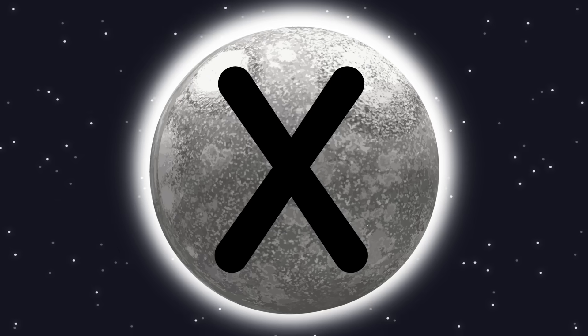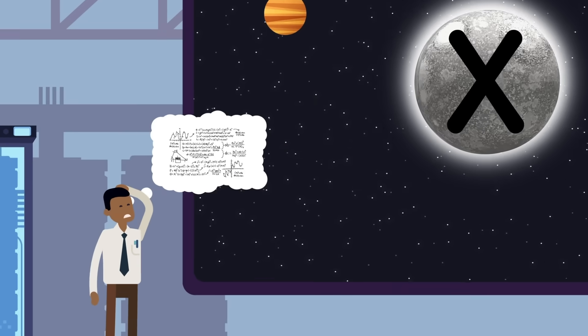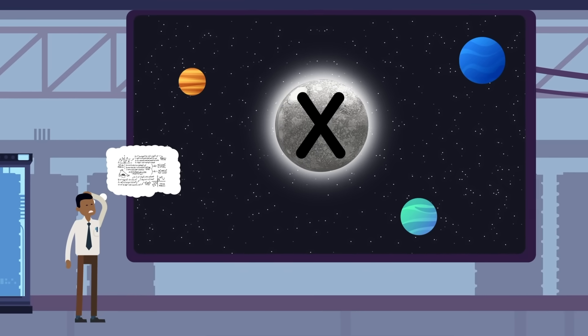The math should be precise enough that even with the inevitable discovery of other trans-Neptunian objects in such a survey, Planet X could still be uniquely identified.